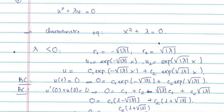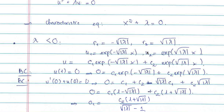The first case: lambda is negative. When lambda is negative, this equation has two roots. The first one is minus the square root of the absolute value of lambda, and the second one is the square root of the absolute value of lambda. That gives you two solutions: u1 is c1 times exponential of r1*x, and u2 is c2 times exponential of r2*x.